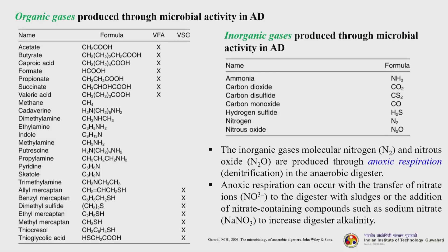Organic gases include acetate, butyrate, caprylic acid, formate, propionate, succinate, and a big list of others. Inorganic gases like molecular nitrogen and nitrous oxide are produced through anoxic respiration — a process called denitrification in the anaerobic digester.